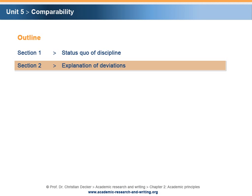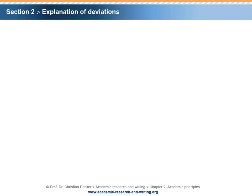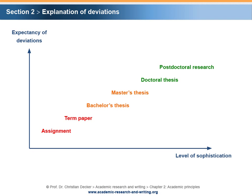Section 2: Explanation of deviations. In the previous section, it was stated that deviations from the status quo of a discipline are possible but have to be explained. This leaves the question of under which circumstances deviations are possible or might be expected. This can be explained with a graphic that shows the idealized positioning of academic research projects.